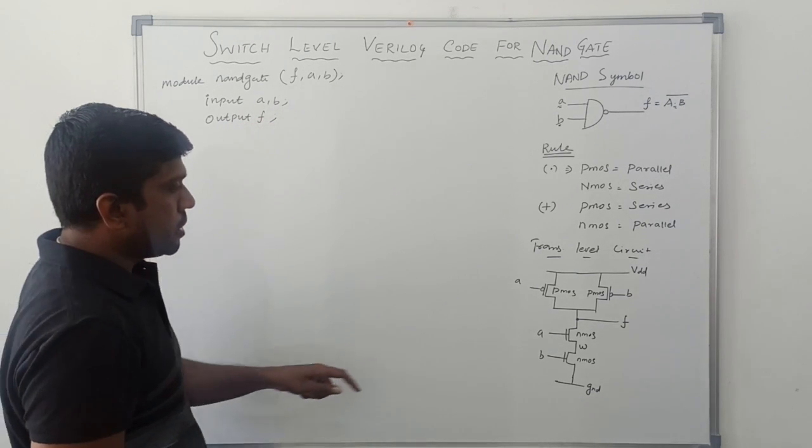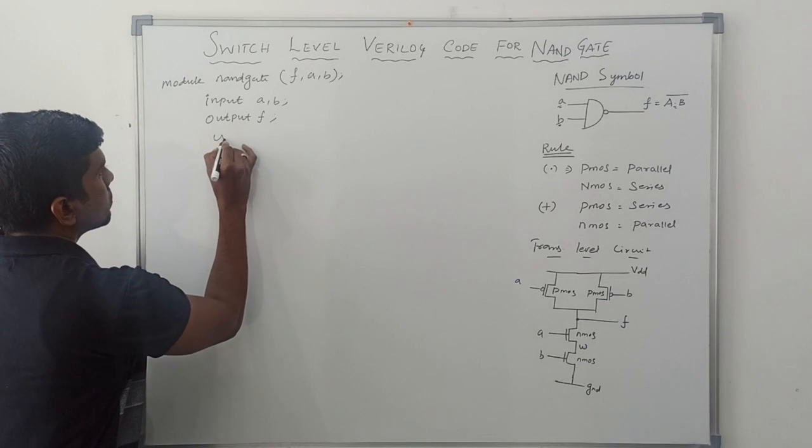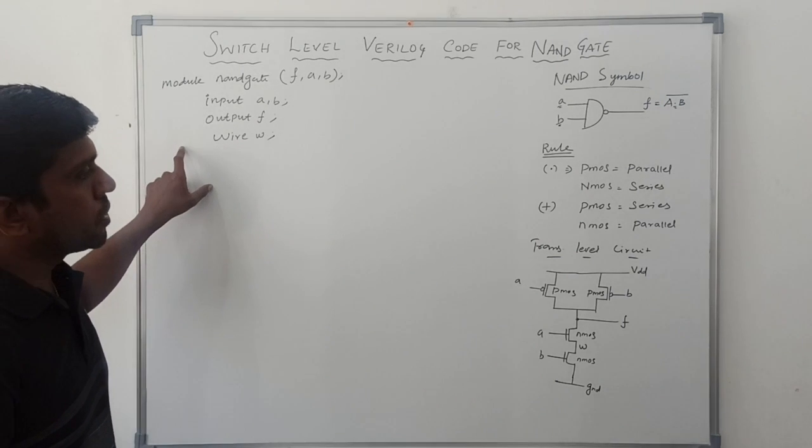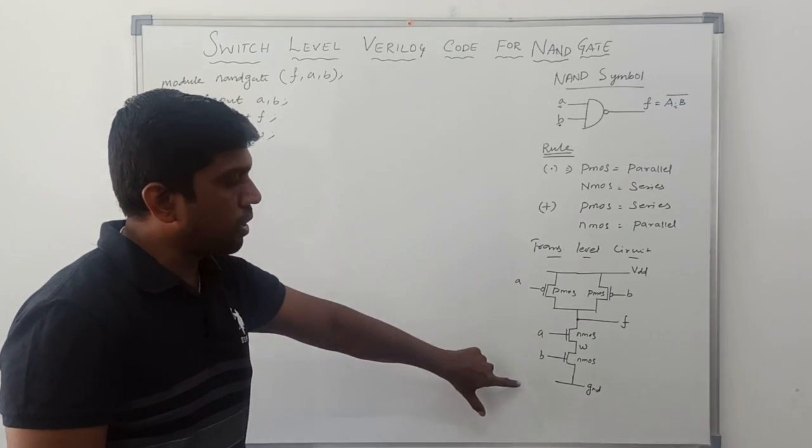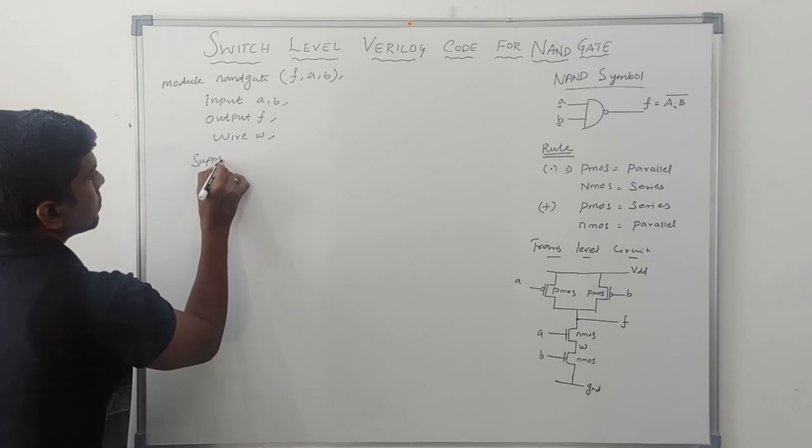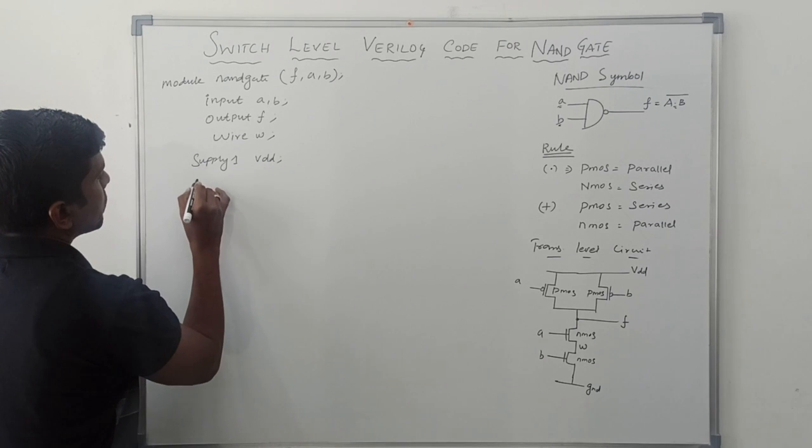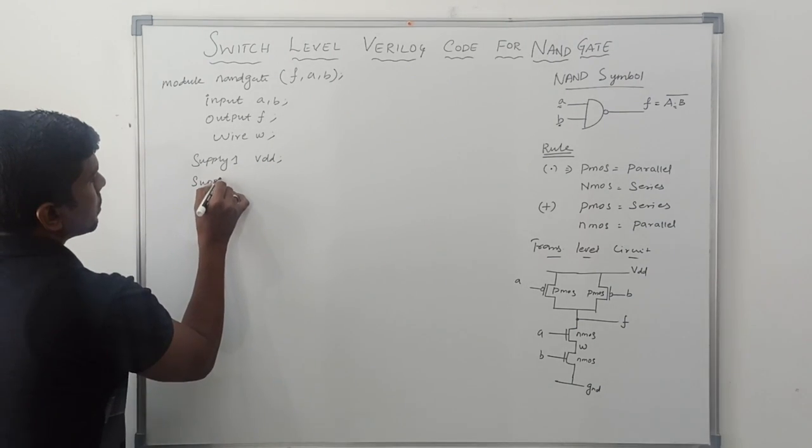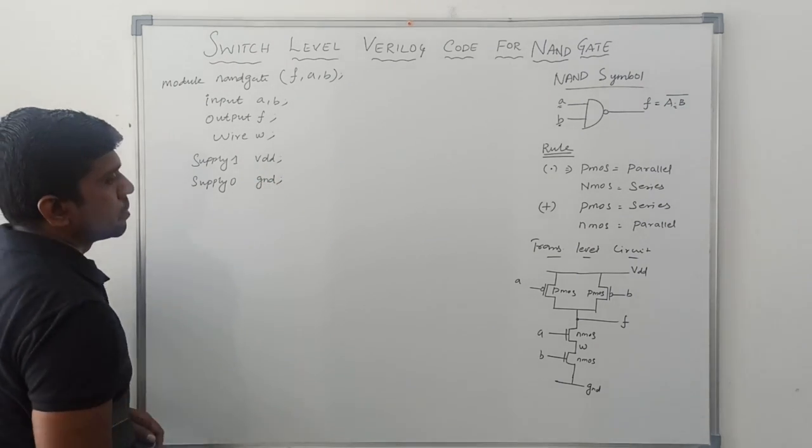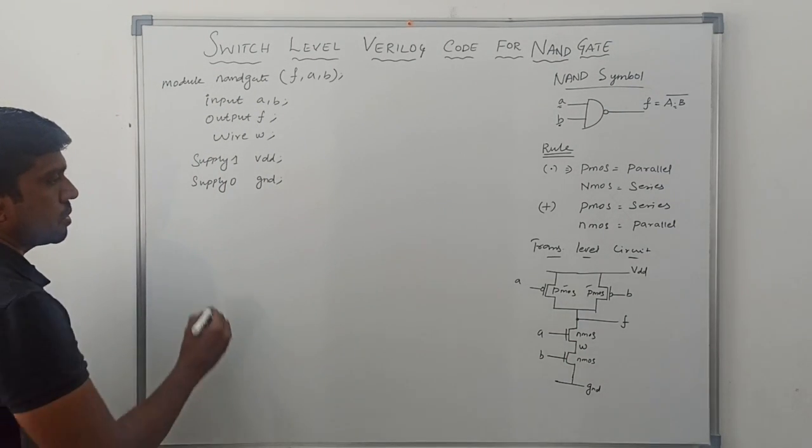In this diagram, we have one wire signal, W. Wire W. Then, I declare supply 1 and supply 0. Supply 1 refers to VDD. Supply 0 refers to ground. Then, I instantiate these two transistors. PMOS transistor.